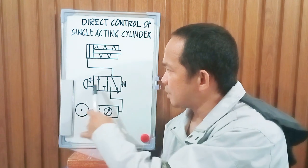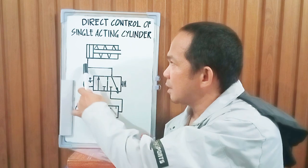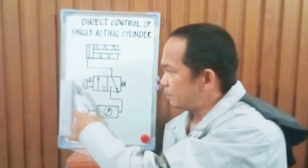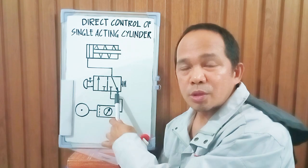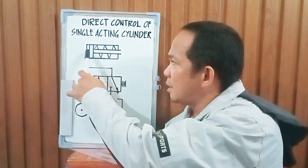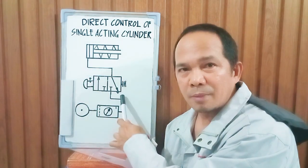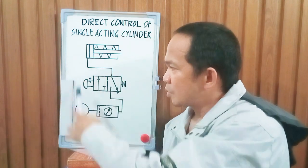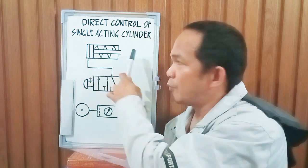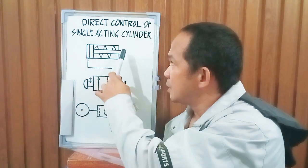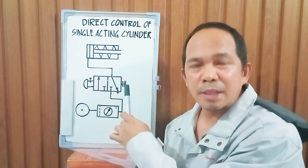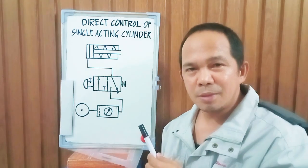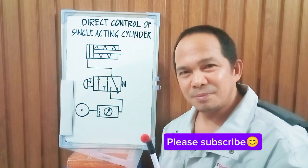So if you push the button, the valve will switch over, the air will pass through, and the cylinder will move forward. If you actuate it once more, it will go back to its original position and the compressed air will simply exhaust, causing the piston rod to move backward. That is the direct control of a single-acting cylinder. Did you learn something? Please share and subscribe. Thank you.